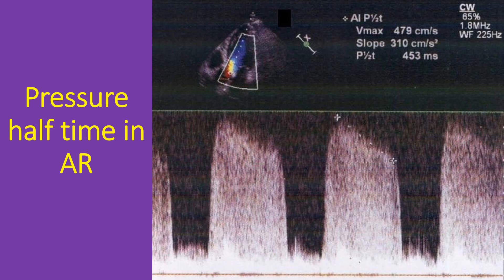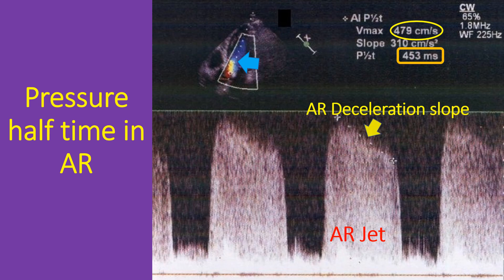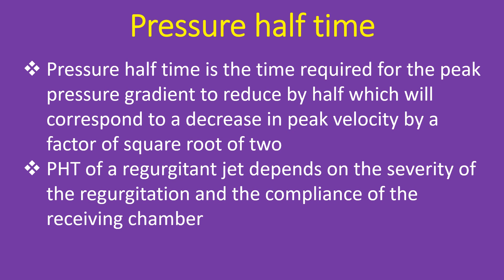This picture demonstrates measurement of pressure half time of the aortic regurgitation jet using continuous wave Doppler from the apical 5-chamber view. The Doppler cursor is seen passing through the left ventricular outflow tract and aorta. The AR jet is seen as the positive tracing above the baseline. The peak velocity of the AR jet is shown as 4.7 m/s, AR PHT is shown as 453 ms, and the AR deceleration slope is shown as 310 cm/s². Pressure half time is the time required for the peak pressure gradient to reduce by half, which corresponds to a decrease in peak velocity by a factor of the square root of 2.